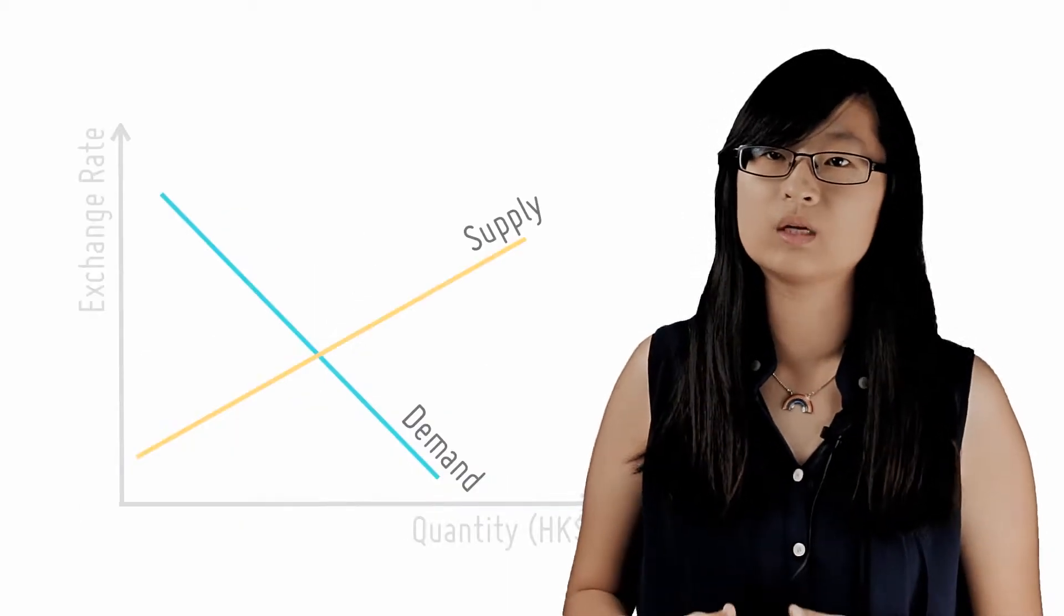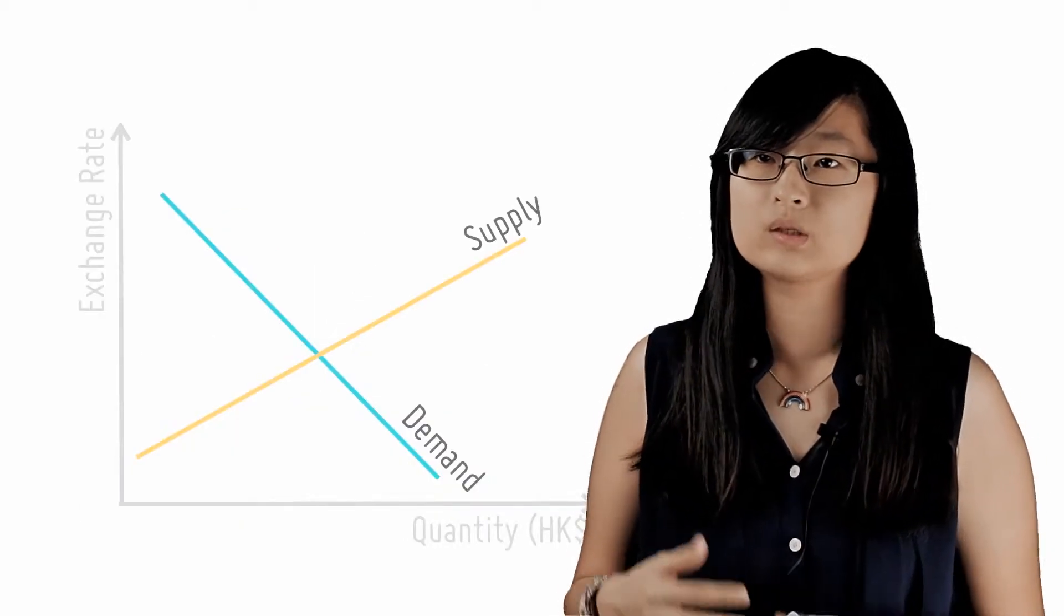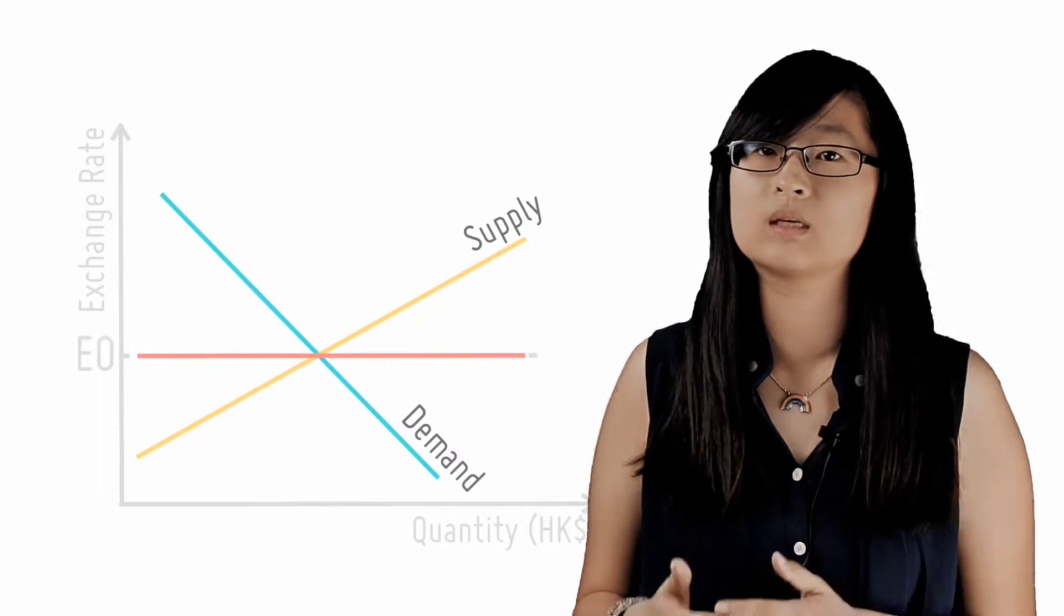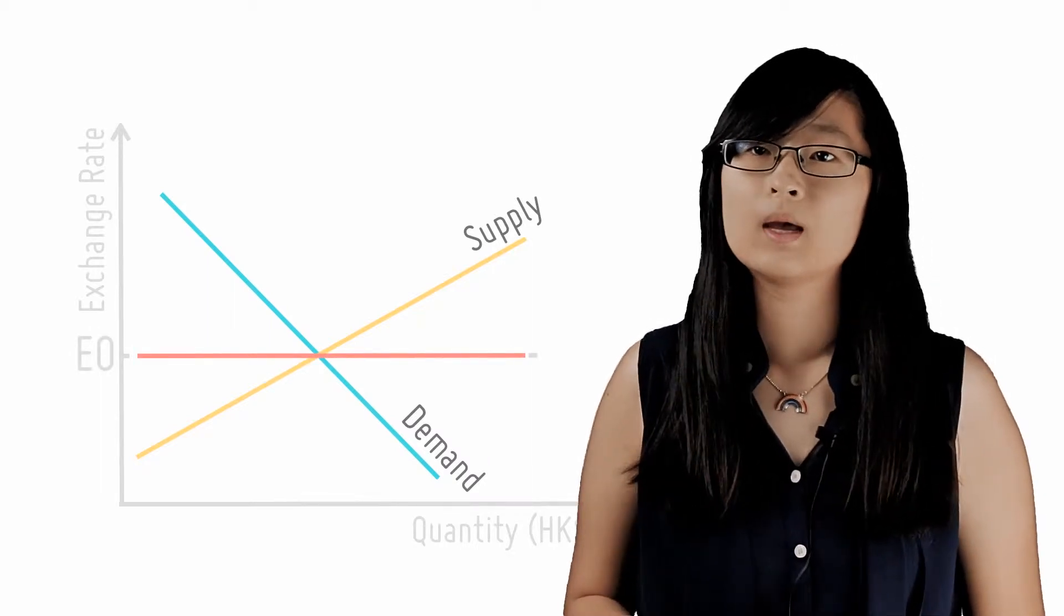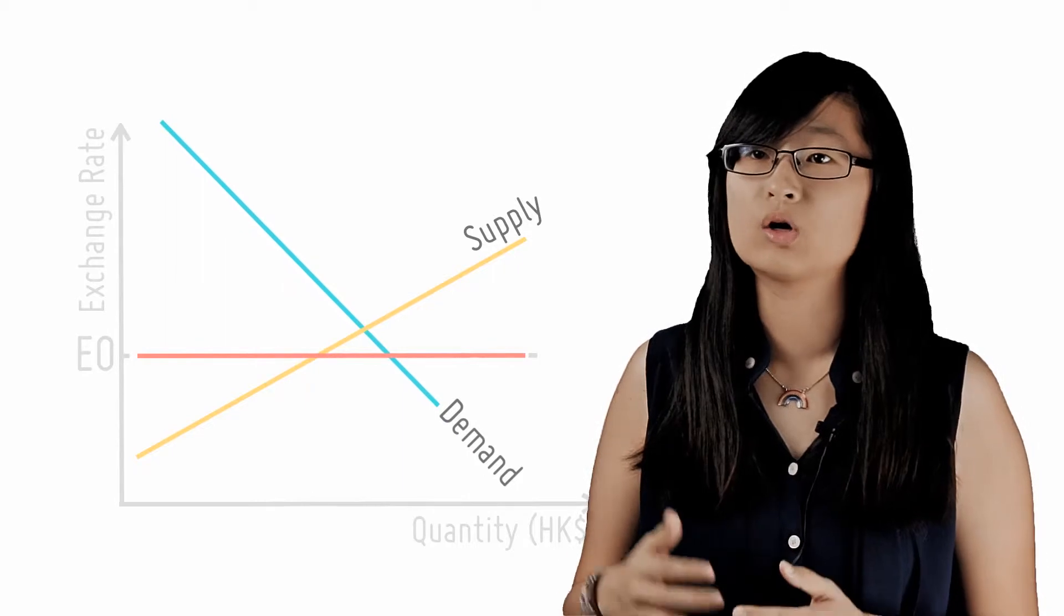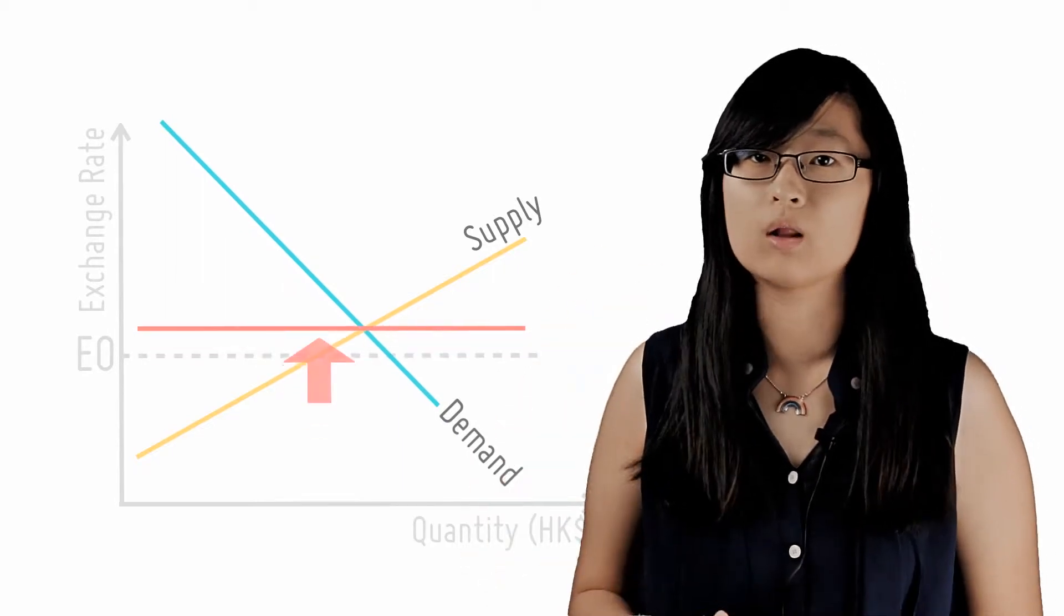Let's illustrate this graphically using the Hong Kong dollar as an example. Say the Hong Kong government is committed to keeping its exchange rate at E0 in terms of USD. An increase in demand for Hong Kong dollars causes an upward pressure on the Hong Kong dollar against the USD.